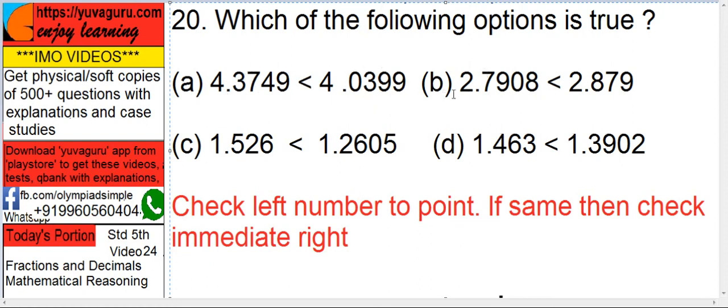Then next, B. 2, 2. Okay. Then 7, 8. Yes. Is 2.7 less than 2.8? Yes. So you have got the answer B here itself. Don't check C and D.